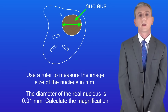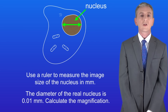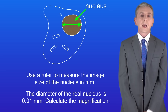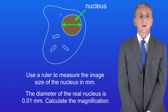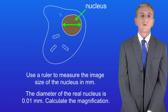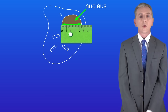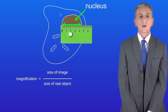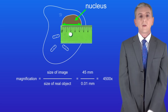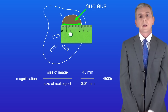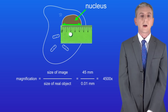Here's a typical question: use a ruler to measure the image size of the nucleus in millimeters. The diameter of the real nucleus is 0.01 millimeters — calculate the magnification. So using a ruler we can measure the image size; in this case the size of the image is 45 millimeters. We know that the actual diameter of the nucleus is 0.01 millimeters. The magnification is the size of the image divided by the size of the real object, so 45 divided by 0.01 gives us a magnification of 4,500 times.